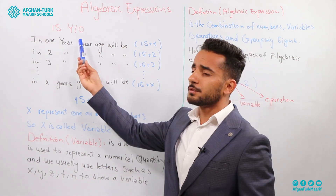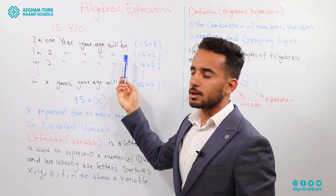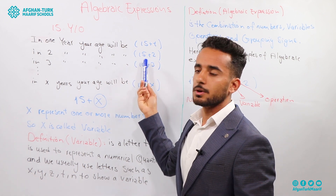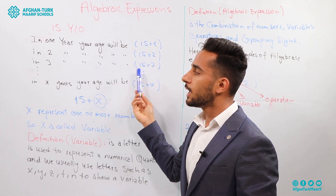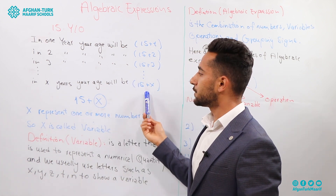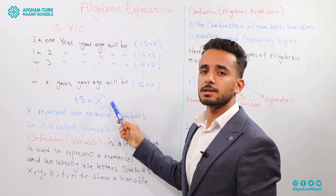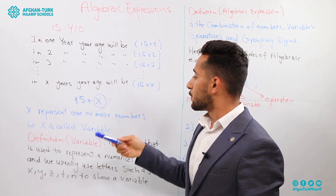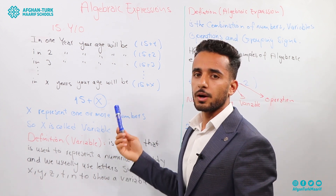Assume that you are 15 years old. In 1 year, your age will be 15 plus 1. In 2 years, your age will be 15 plus 2. And in 3 years, your age will be 15 plus 3, and so on. In X years, your age will be 15 plus X. What does this X mean? X represents one or more numbers, so X is called a variable.